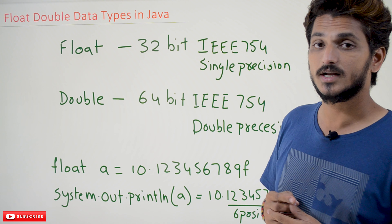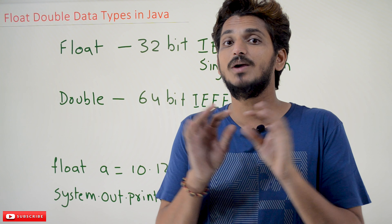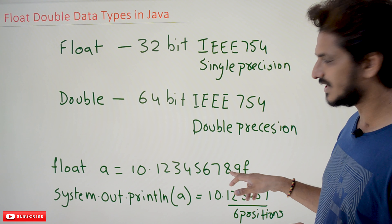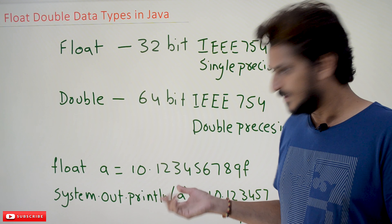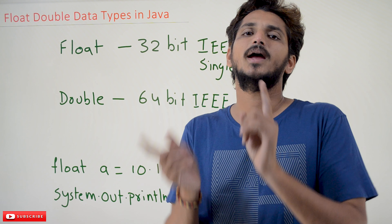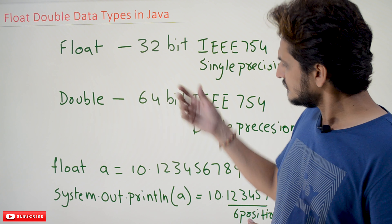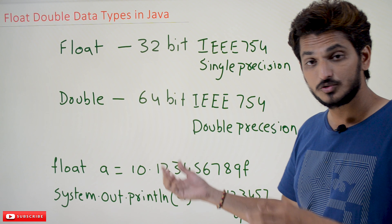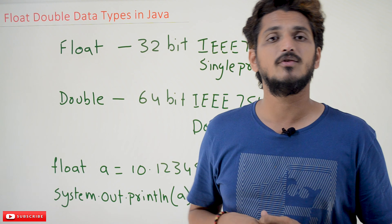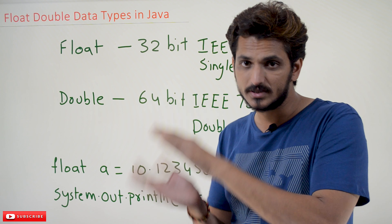One more difference you have to understand. In our last class, we discussed that our computer does not understand decimal numbers. For example, if you take float a = 10.123456789 — these are decimal values. Our computer is not able to store these decimal values directly; it is going to store only binary digits. So what conversion format is it going to use? This floating point number must be converted into a binary number. What is the standard for that conversion?